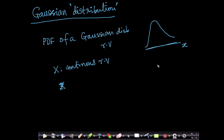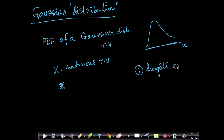Why should you learn about this distribution? Because a lot of things in nature actually follow Gaussian distribution — not everything, but certainly some very important things. For example, heights of people, similarly weights of people tend to follow a Gaussian distribution.